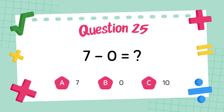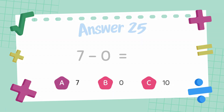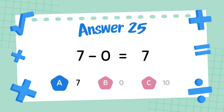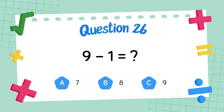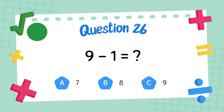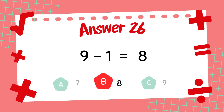What is 7 minus 0? The answer is 7. What is 9 minus 1? The answer is 8.